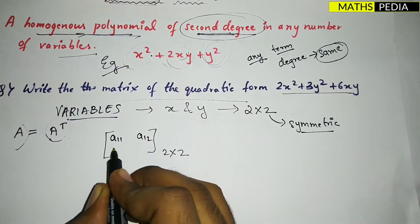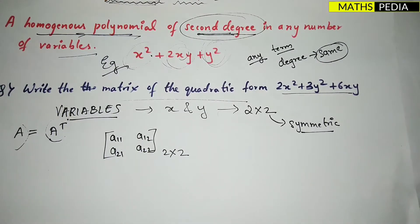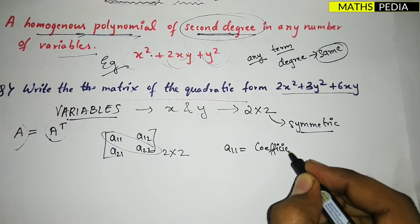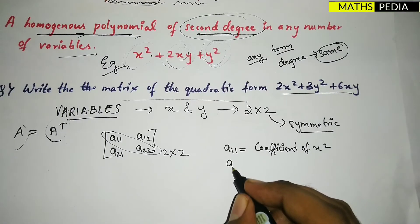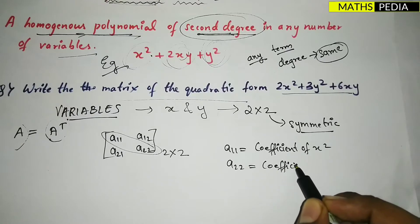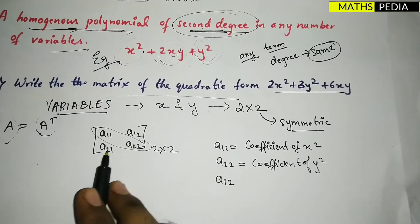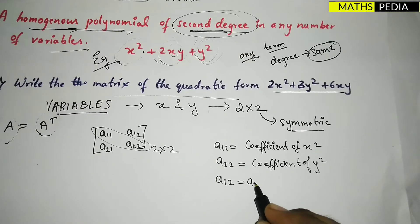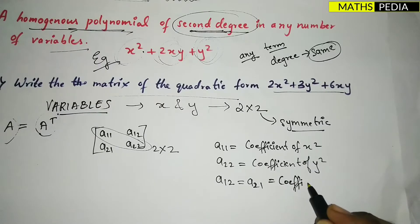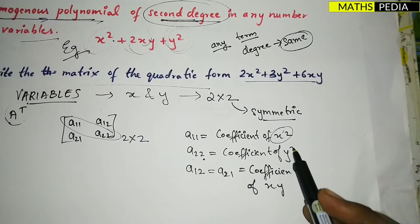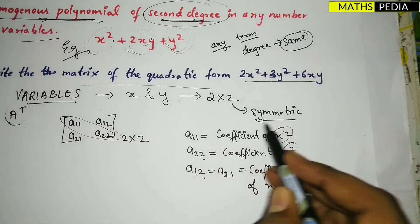We need to find all elements: a₁₁, a₁₂, a₂₁, a₂₂. The diagonal elements a₁₁ and a₂₂ are the coefficients of x² and y² respectively. The off-diagonal elements a₁₂ and a₂₁ will be the same — that's because the matrix is symmetric — and they correspond to the remaining term, which is xy.